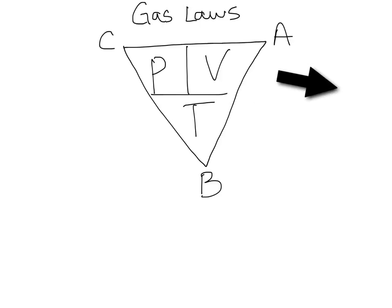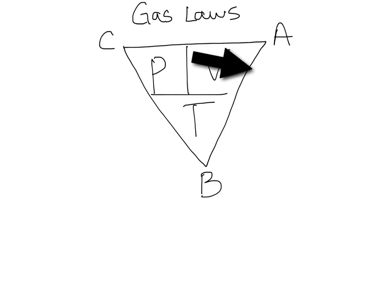If you have the volume being held constant, your finger would go on top of the V. You see it's P1 over T1 equals P2 over T2, and that is Amontons' Law.